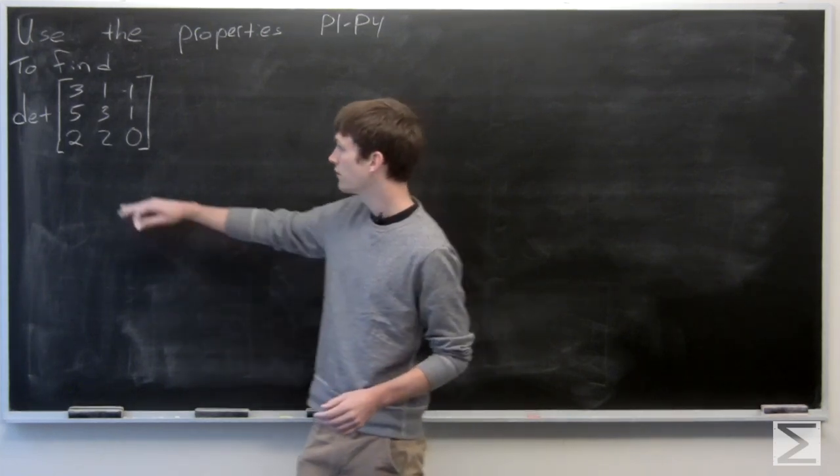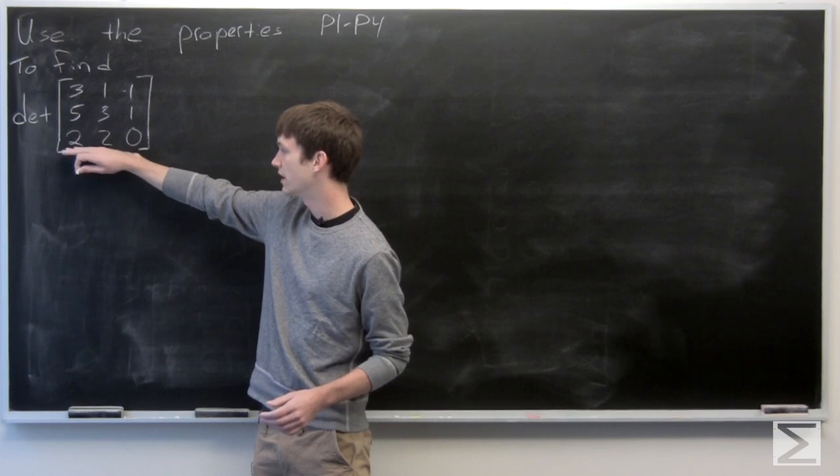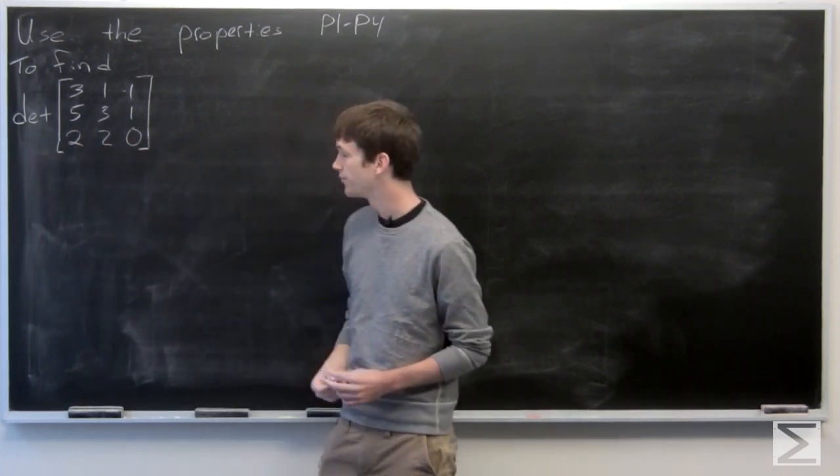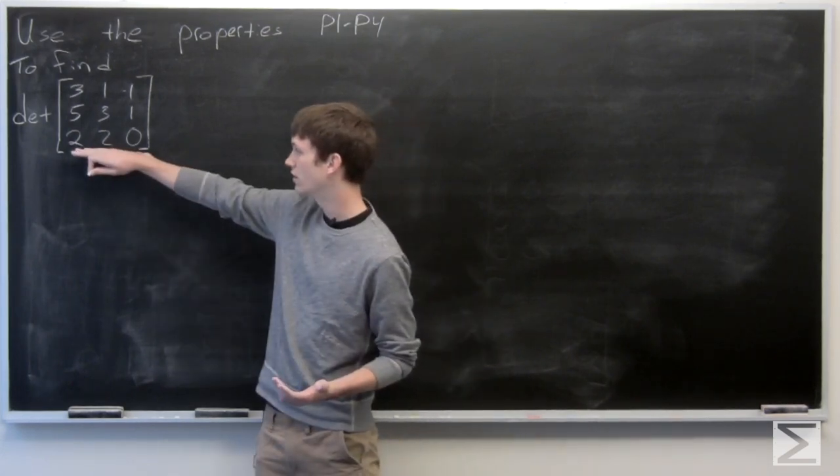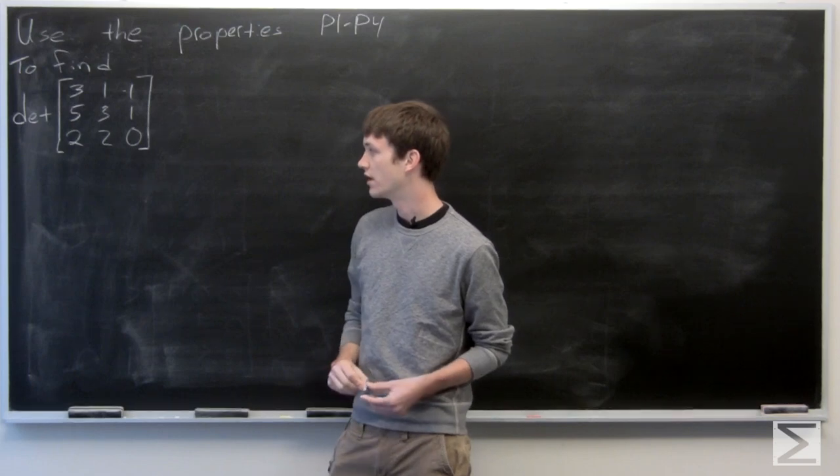First off, we can see that this 2, 2, 0 would be easy to factor 2 out. So we'll go ahead and exchange our row 1 and row 3.